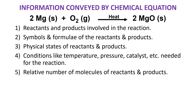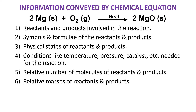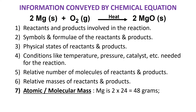The last piece of information a chemical equation gives you is the relative masses of reactants and products. As you can see here, I have calculated this. For magnesium, we are using 2 Mg, meaning two atoms of magnesium. The atomic mass of magnesium is 24, so 2 Mg means 2 × 24 = 48 grams. For oxygen, the atomic mass is 16, but it is O₂, so 2 × 16 = 32 grams.